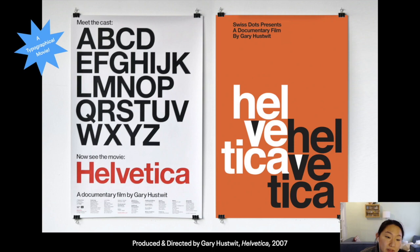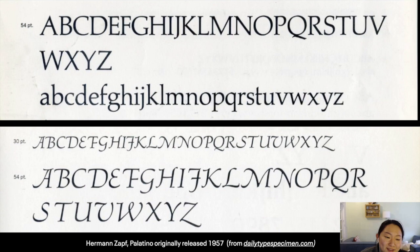The German calligrapher Hermann Zapf sort of rises to the scene in 1950 with Palatino. And Palatino, if you remember, was like the writing master from the Italian writing manual era. We'll see a lot of Hermann Zapf's work here.